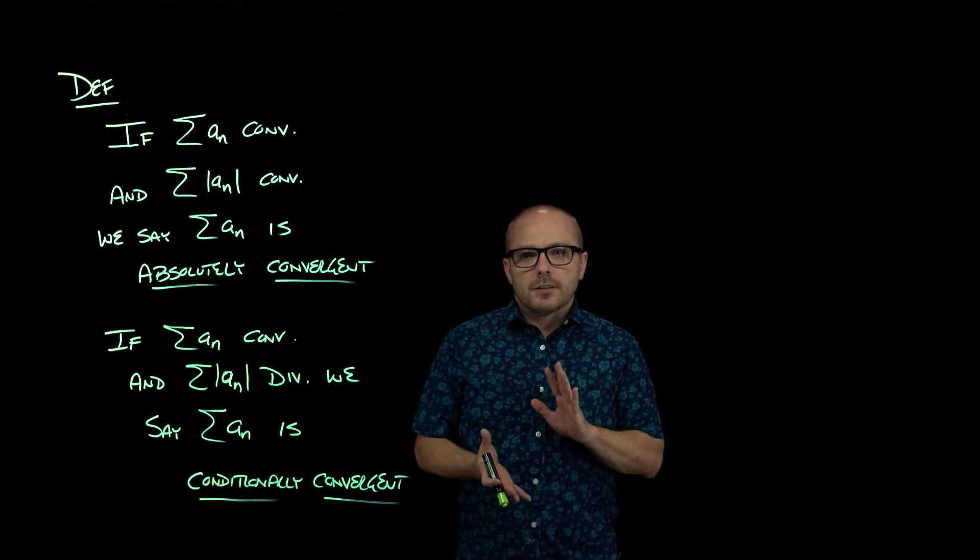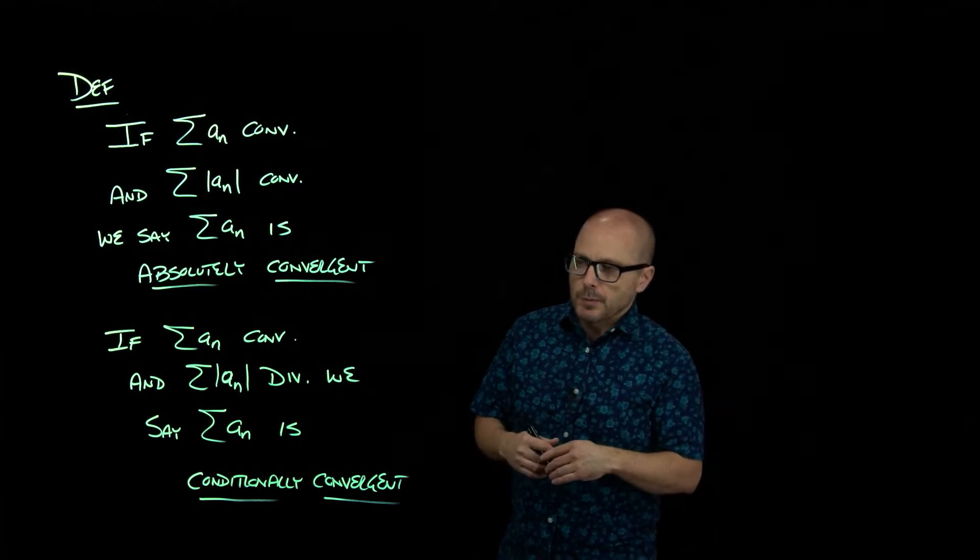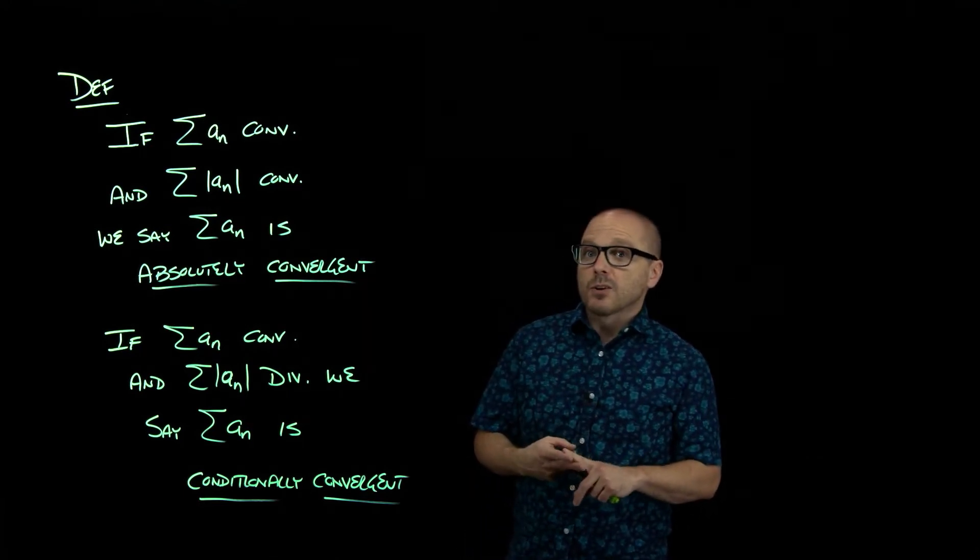So far we have said that a series is either convergent or divergent. We've been trying to determine which. Now we're going to create two subcategories of convergence.